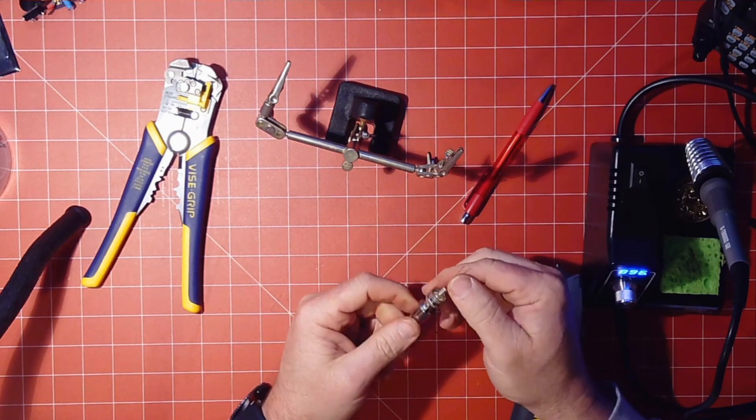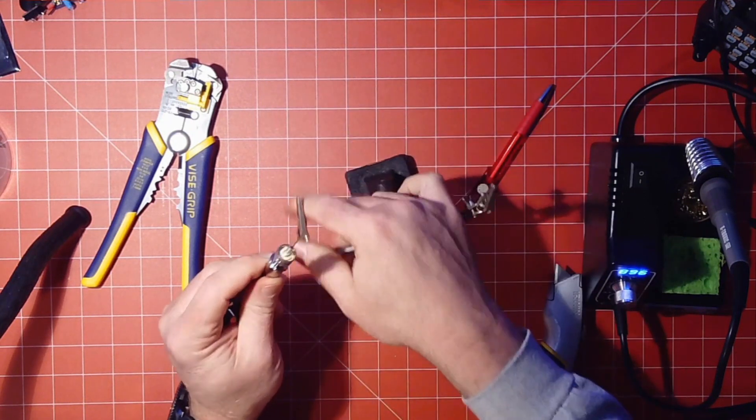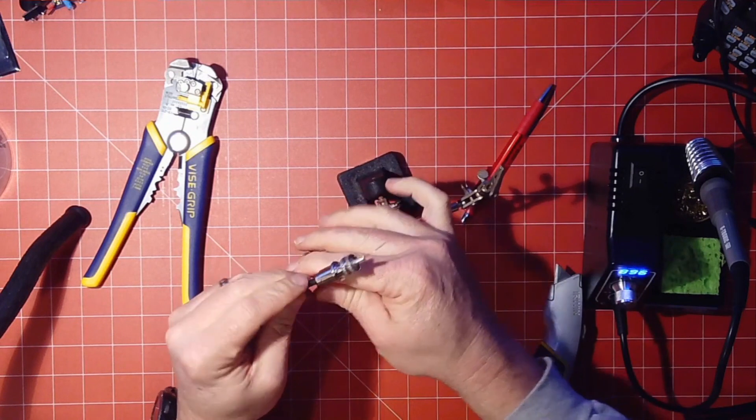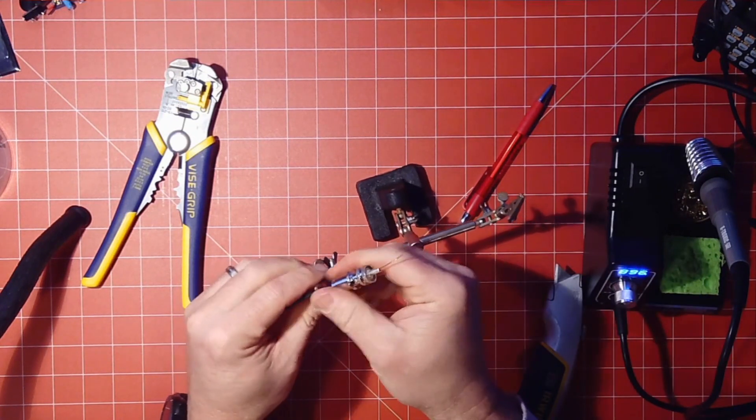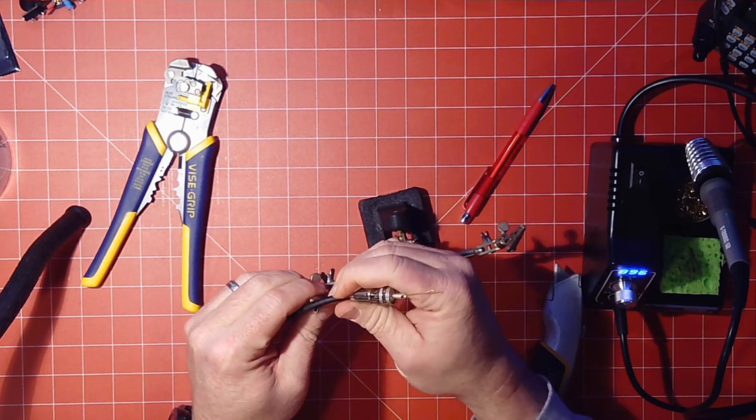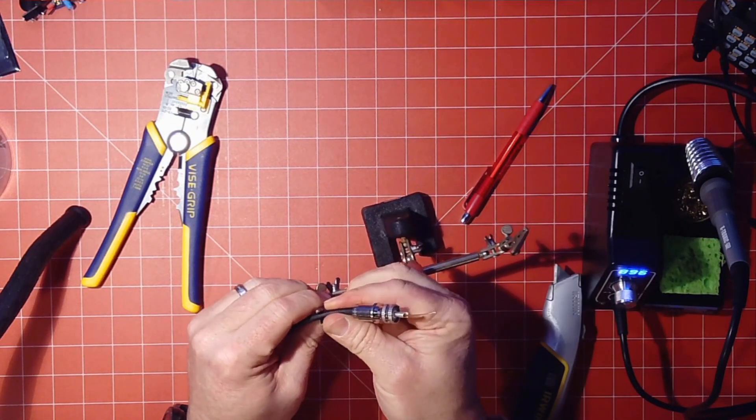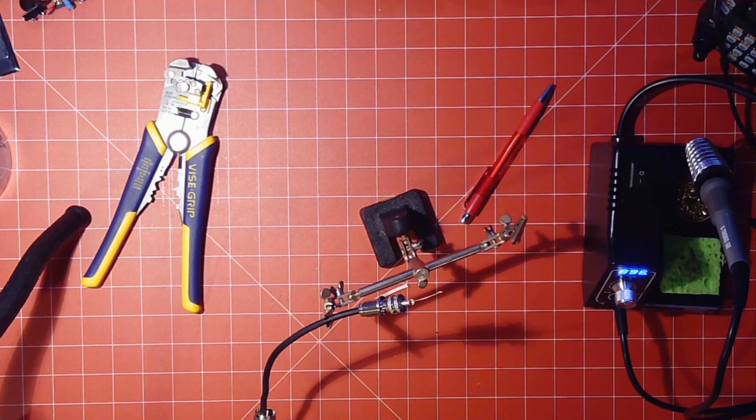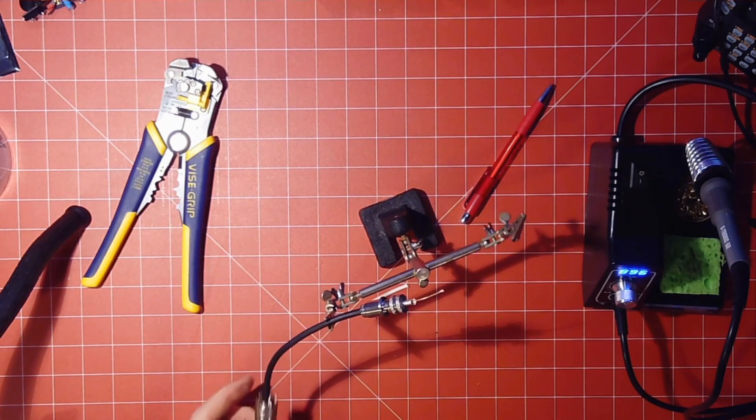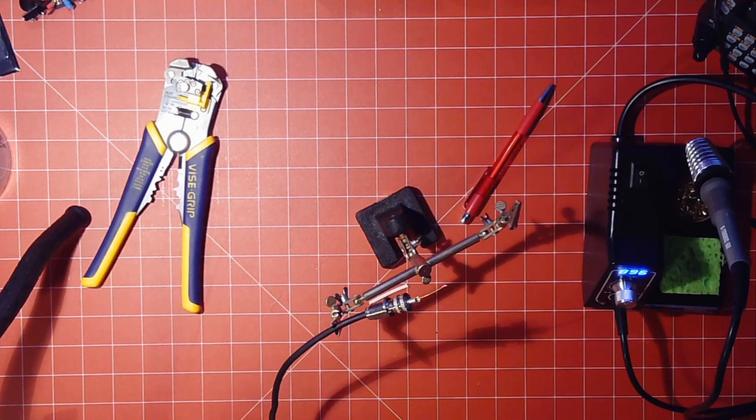And what we're going to do next is get our helping hands. And we're going to hold this piece here. So, again, before you solder anything, check again. Did you remember to put your sleeves on the coax? If you forgot it, undo it and redo it now because you're going to have to redo it anyway.